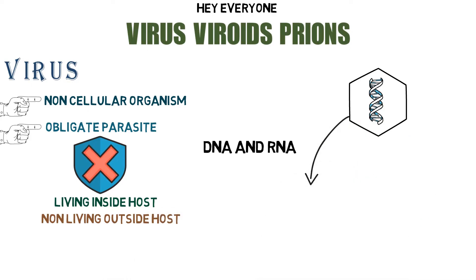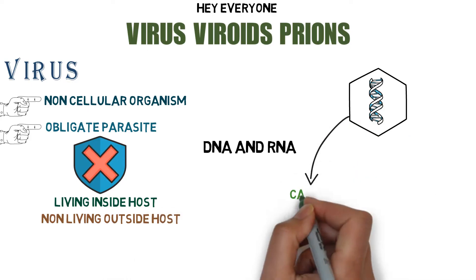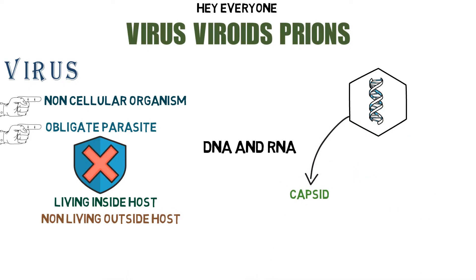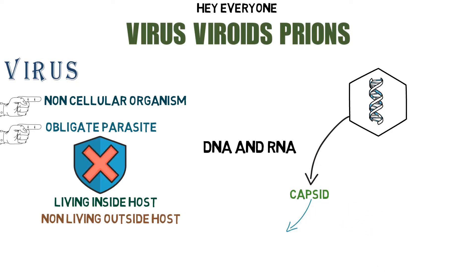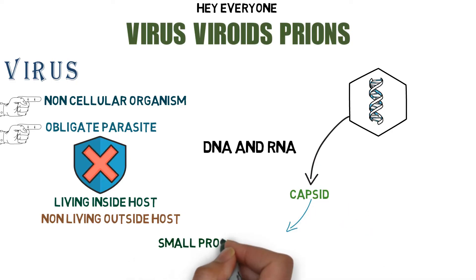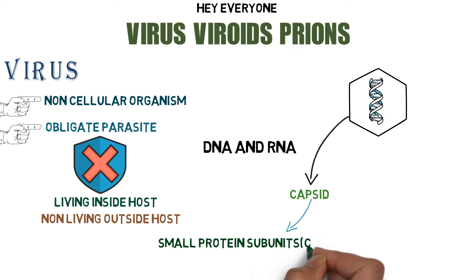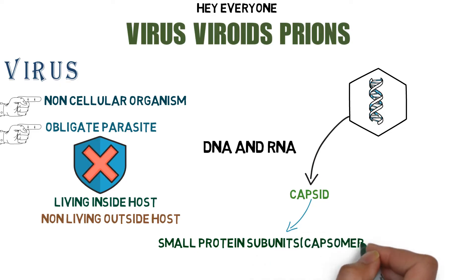The protein coat on the outside of the virus is called the capsid. The capsid is made up of small protein sub-units called capsomeres.